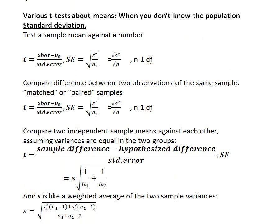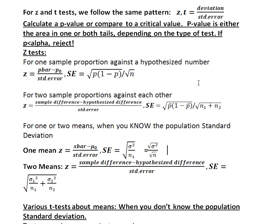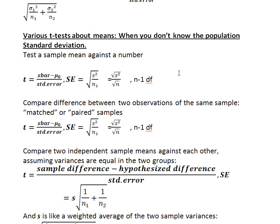A t-test is for a case when you don't know the population standard deviation. However, with proportion problems, we always use the z because we start off by assuming we know the standard deviation — it's just the square root of p times 1 minus p, which we assume from our null hypothesis. So people always use the z for proportion tests.